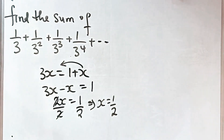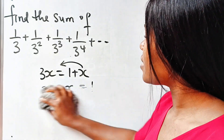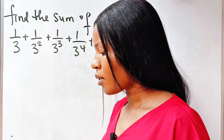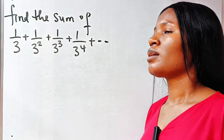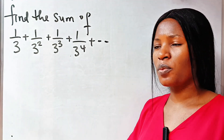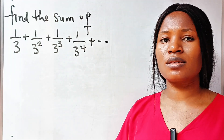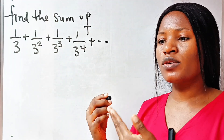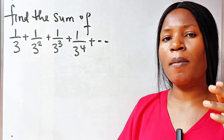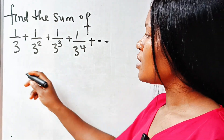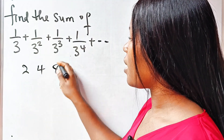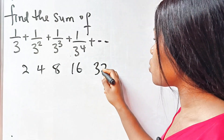Now to the most interesting aspect — we are going to solve this using a formula. Remember that this is a geometric progression. A geometric progression is a sequence achieved by multiplying a previous number by a constant to get the next number. For example: 2, 4, 8, 16, 32, and so on.